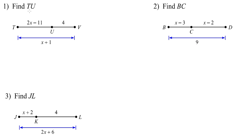To find the length of whatever segment they want us to find, we need to use that to write our equation and solve it. Here they want us to find TU, and we know that TU plus UV equals TV. So the equation is: TU is 2x minus 11, plus UV which is 4, equals TV which is x plus 1.